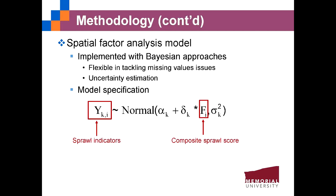The model is implemented with a Bayesian approach. Compared with traditional frequentist methods, this approach is more flexible in estimating urban sprawl for census tracts with missing sprawl indicators. For example, more than 160 census tracts have missing employment rates. The Bayesian approach treats these missing values as unknown parameters rather than removing them from the analysis. It also estimates uncertainties associated with the composite sprawl score by giving a probability distribution for each census tract, allowing us to map the probability that a census tract falls into the category with the highest urban sprawl.